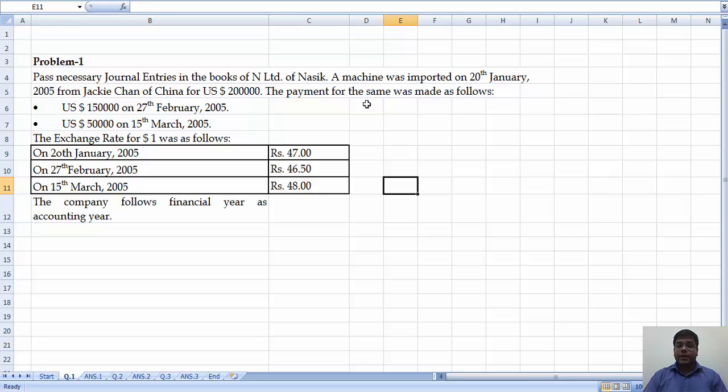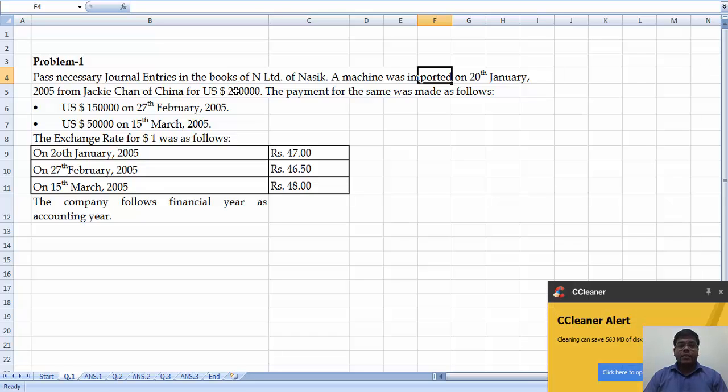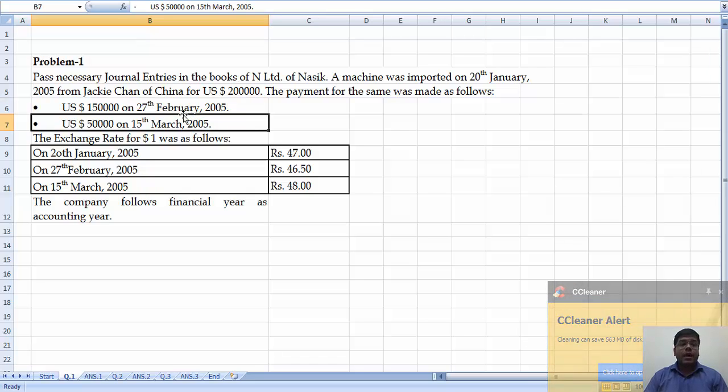So we have imported, so we have to make the payment. The payment for the same was made as follows: for 2 lakh amount we have made the payment in two installments, that is on 27th February 2005 and 15th March 2005.